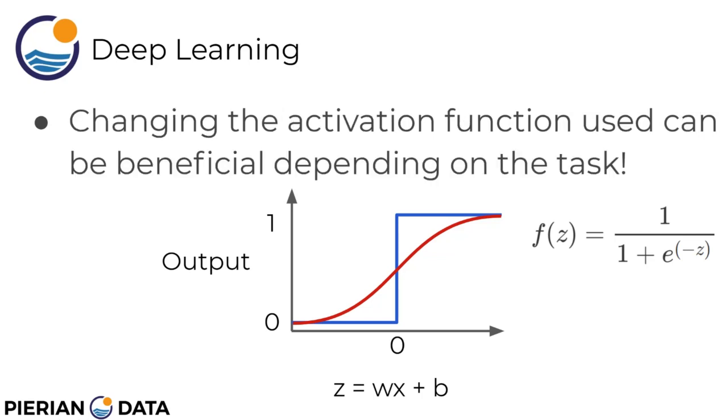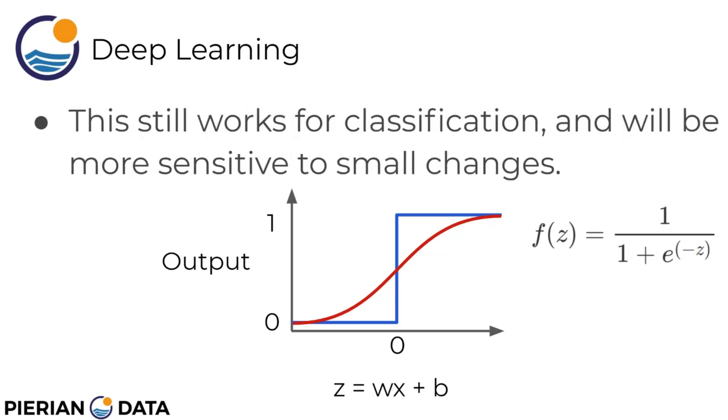Changing the activation function used in your neurons can be really beneficial depending on the task. This still works for classification, but what's really nice is it's going to be slightly more sensitive to small changes. If we want, we can actually grab that output of the sigmoid value to then treat it as a probability between 0 and 1, since there's actually values that it's going to output between 0 and 1 instead of solely 0 or solely 1. That should give you an idea of how sure the network is that it belongs into any particular class.